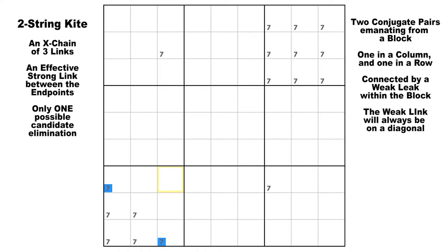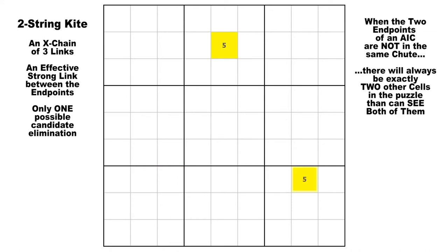Whenever there are two cells that are not in the same house, there can only be two other cells in the whole puzzle that can see both of them. One will be in the same row as the first one and the same column as the second one, and the other will be in the same column as the first one and the same row as the second one.